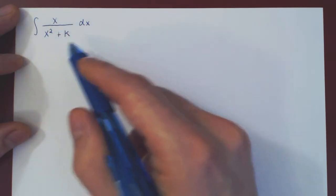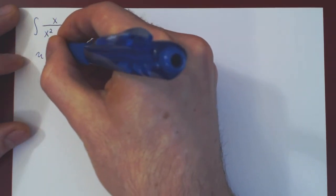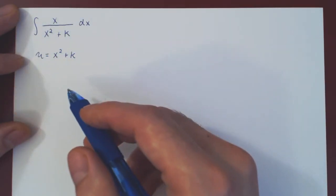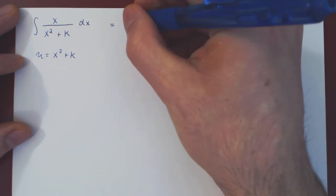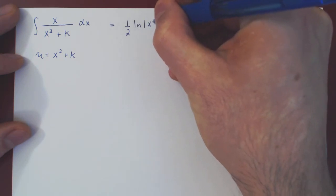And so this is of course a perfect setup for a u substitution, so if you let u be the denominator, x squared plus k, I will let you complete the substitution as it is very straightforward. You will arrive at an answer of a half, the ln of x squared plus k.